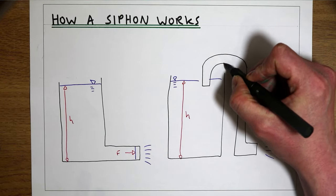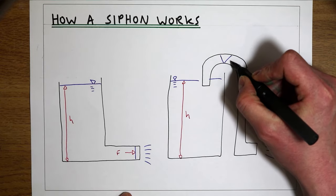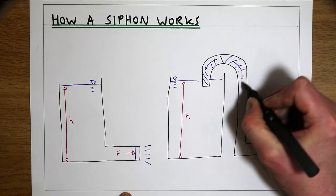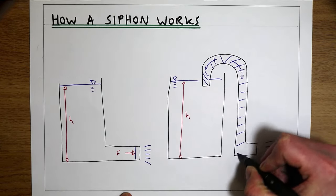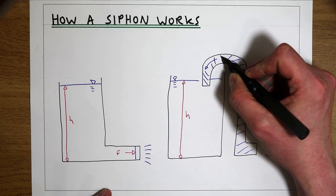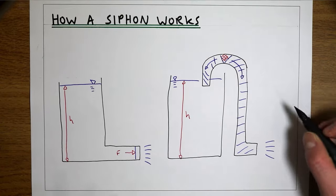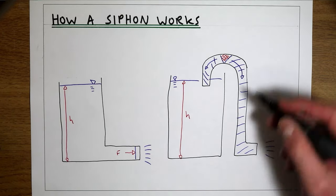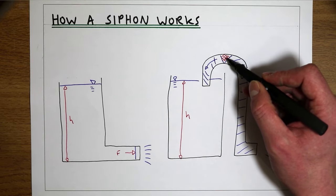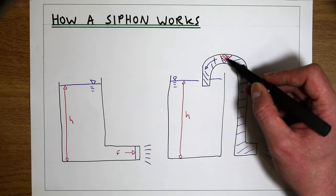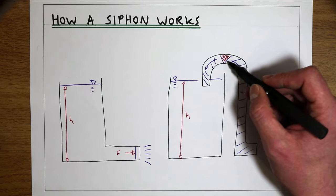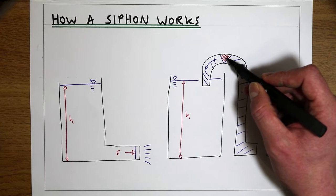So if the water in that pipe tried to separate itself — if it tried to fall down this way and fall down this way — because there's no way for anything else to get into this pipe, what that would mean is in this section of pipe here we would end up with a perfect vacuum. So if the water in this section separated, the area left would be a perfect vacuum with a pressure of zero.